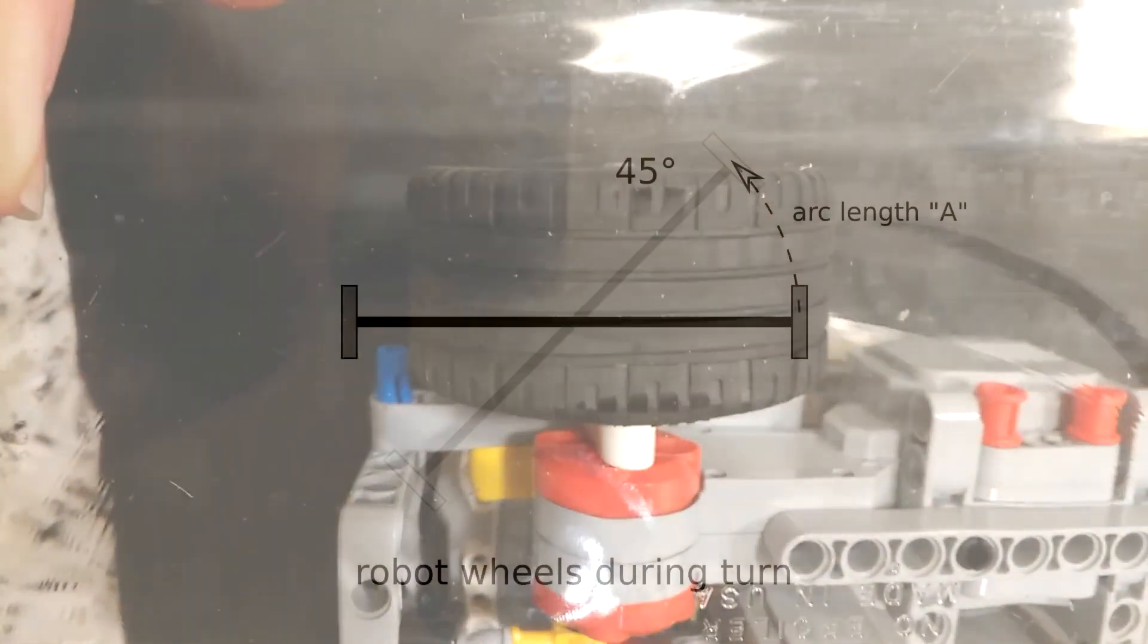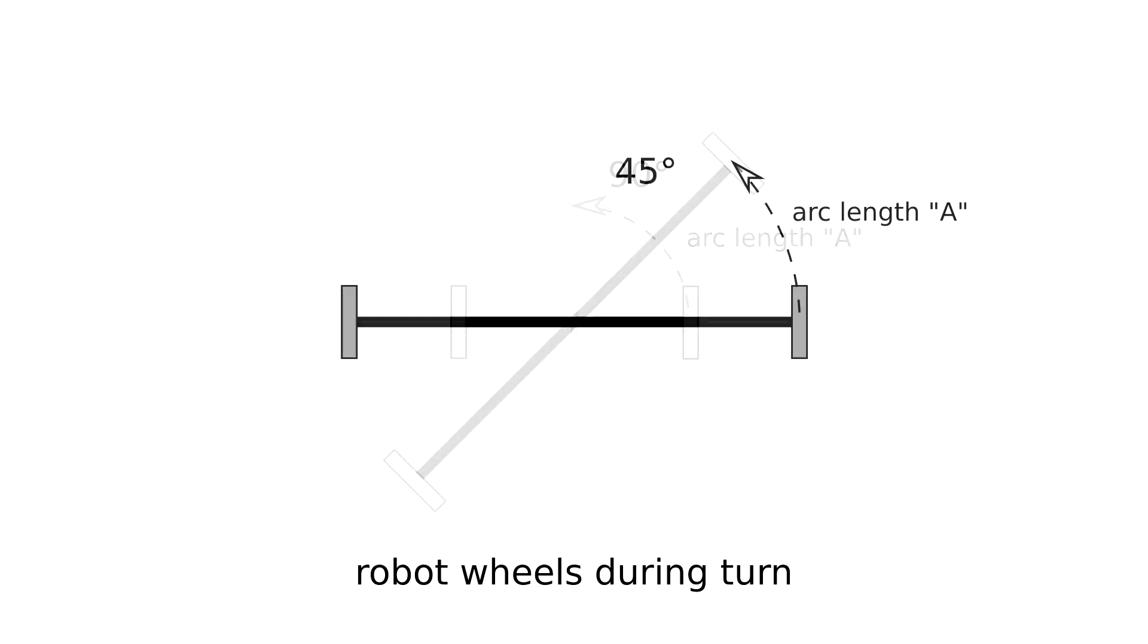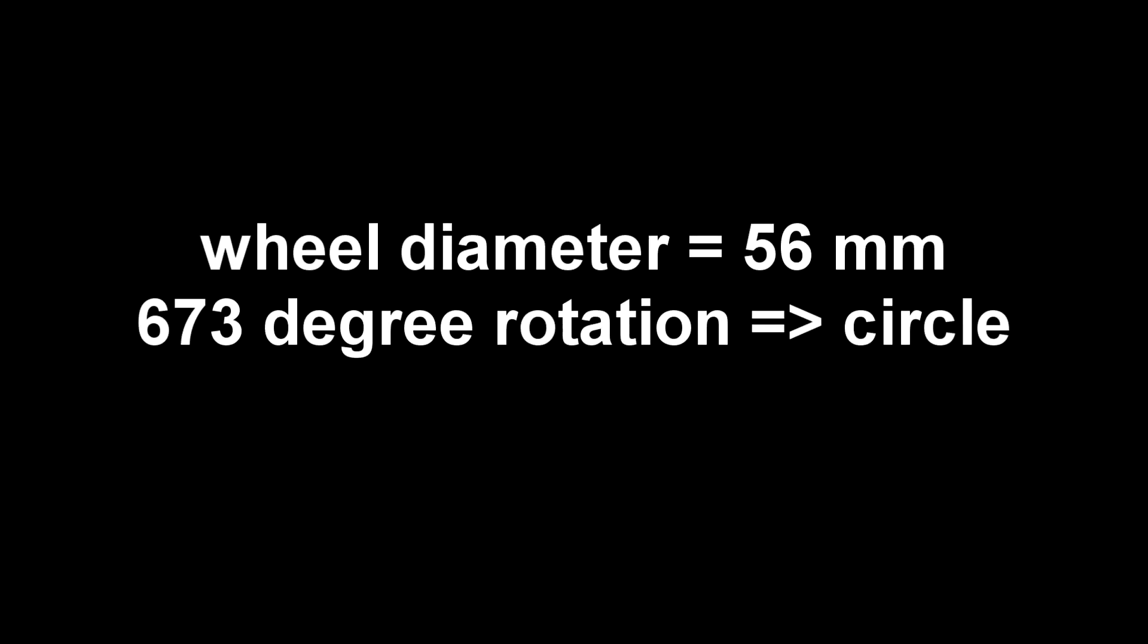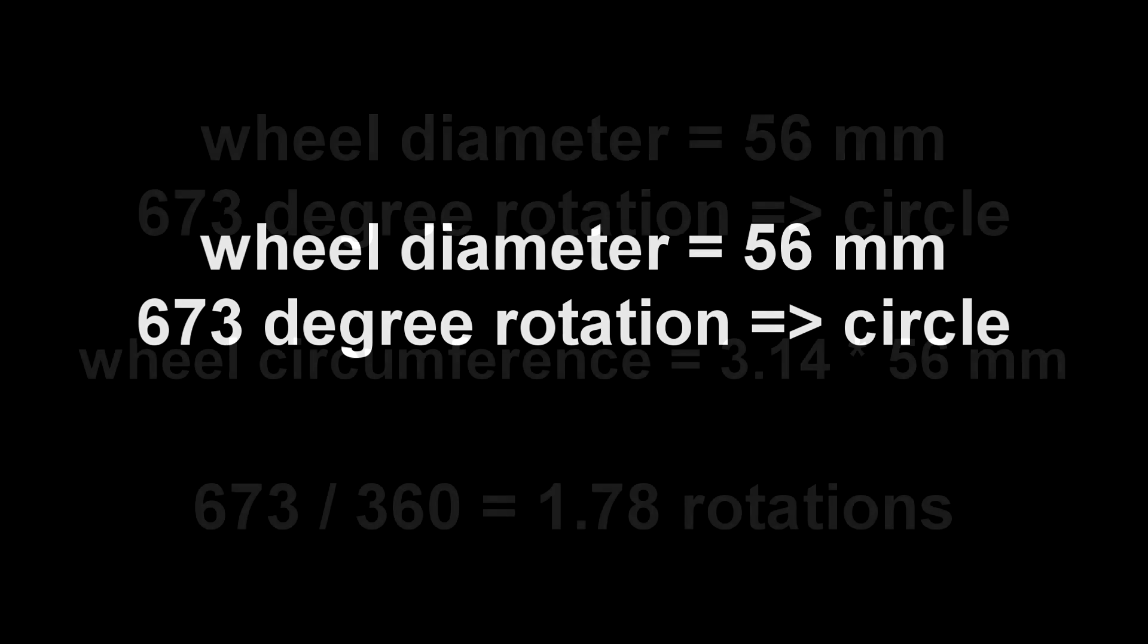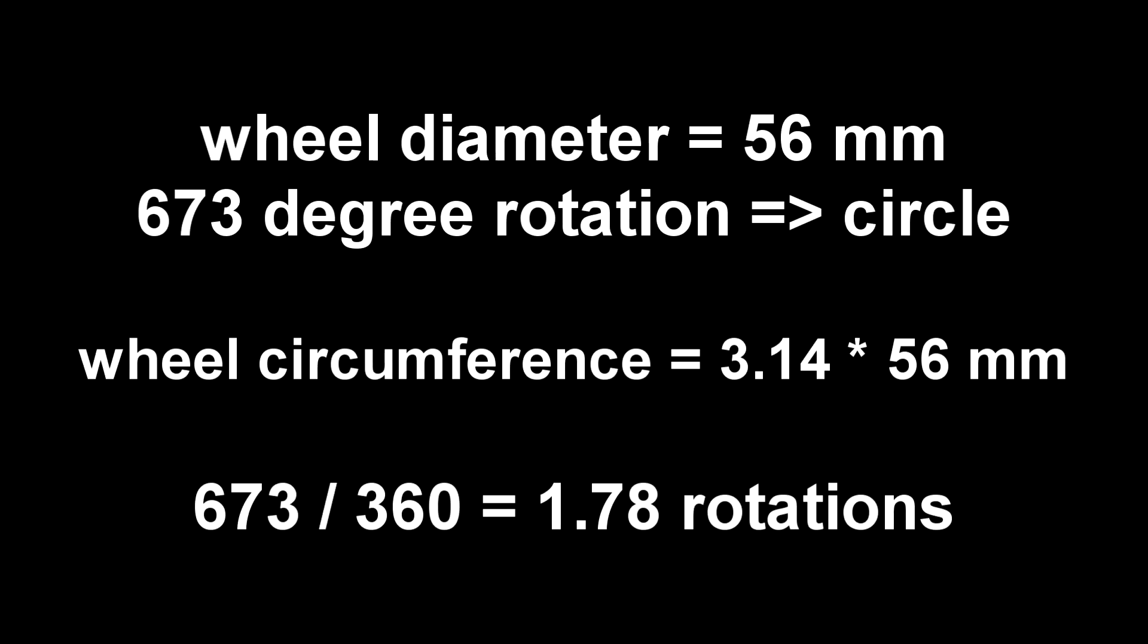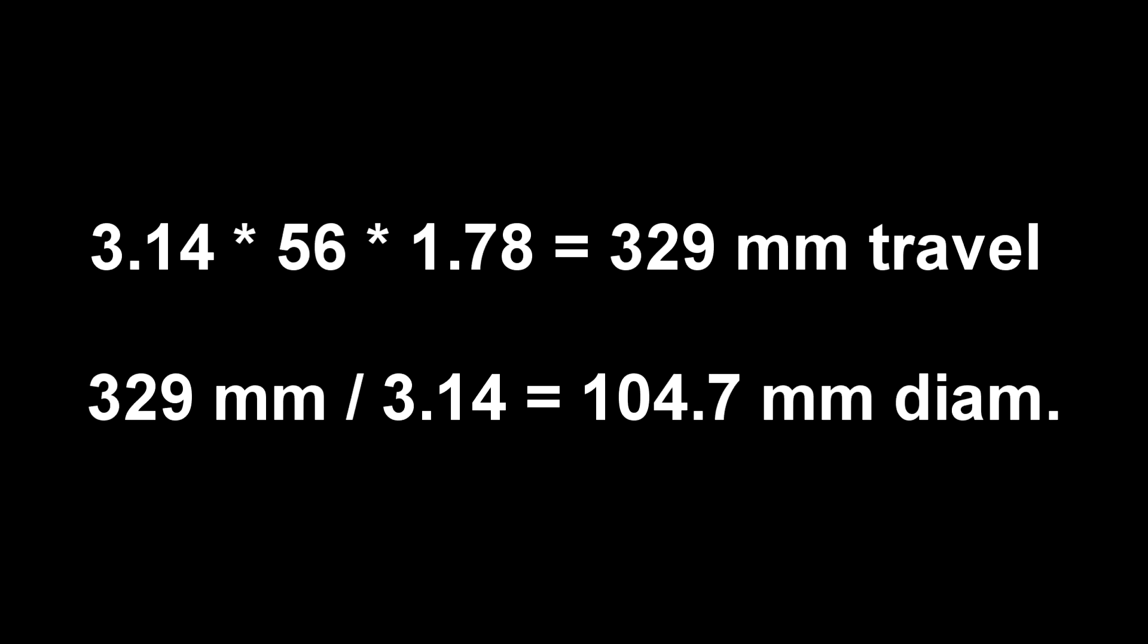If a robot turns, from geometry we know at least one of those contact patches has to break free and slip. We can actually calculate where the effective contact point is, knowing the wheel diameter, 56mm, and the 673 degrees for the full circle. The wheels traveled pi times 56mm times 1.87 rotations equals 329mm, so the circular track diameter is 104.7mm.